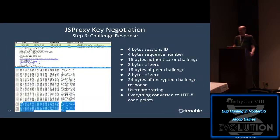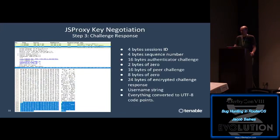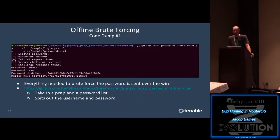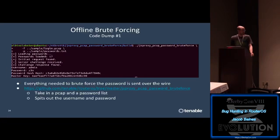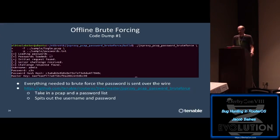After the client receives the server's challenge it can choose a challenge response and also sends the RC4 keys. The client sends a big blob back to the server containing a username, the server challenge, the client challenge, and an encrypted challenge response - everything needed to do an offline brute-force with the password. I coded up a project that takes a PCAP and a password list and it finds matching passwords. In the real world this traffic is flowing over the internet, which makes this tool quite significant.